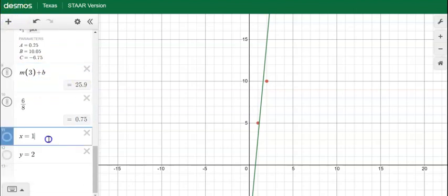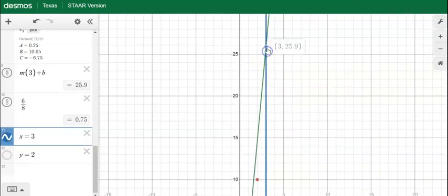Now if we said that x = 3 right here and we find where the two lines intersect, click this, it gives you the same number.